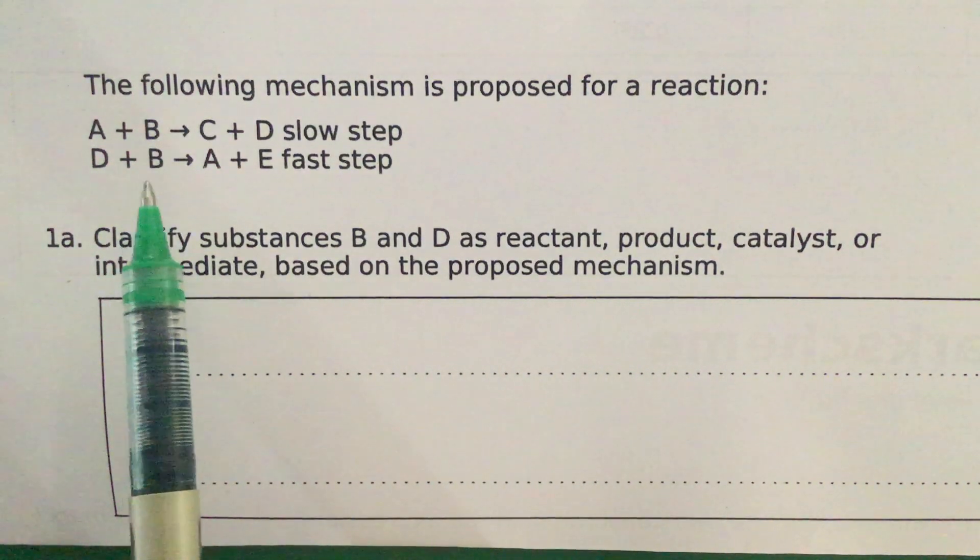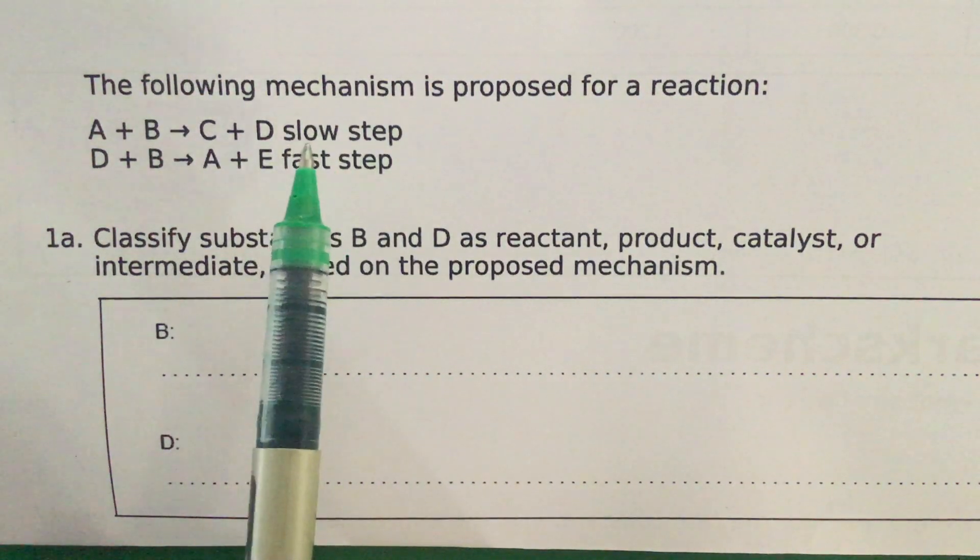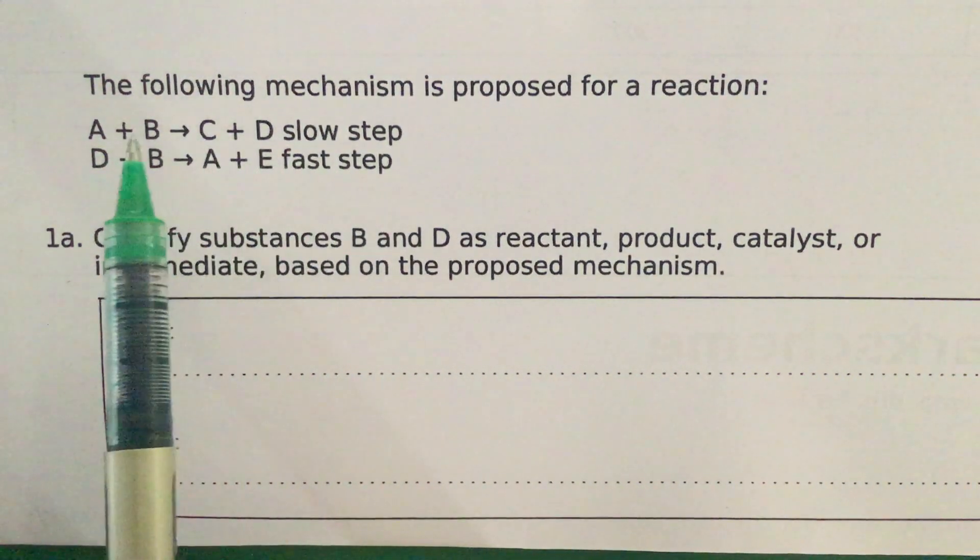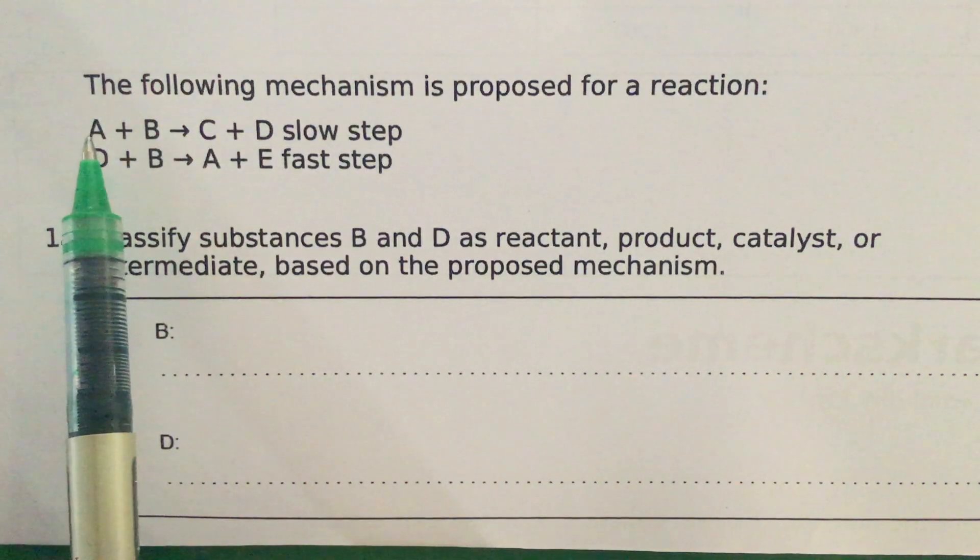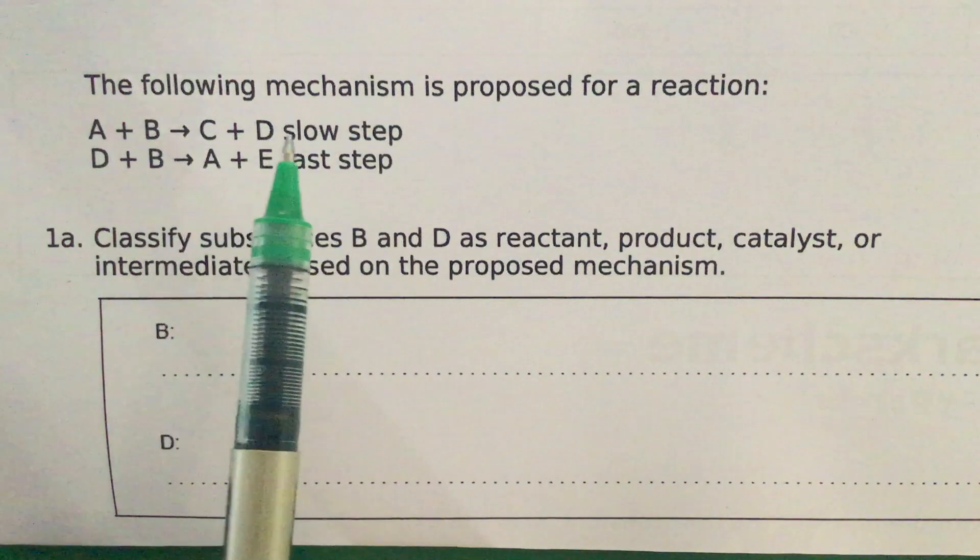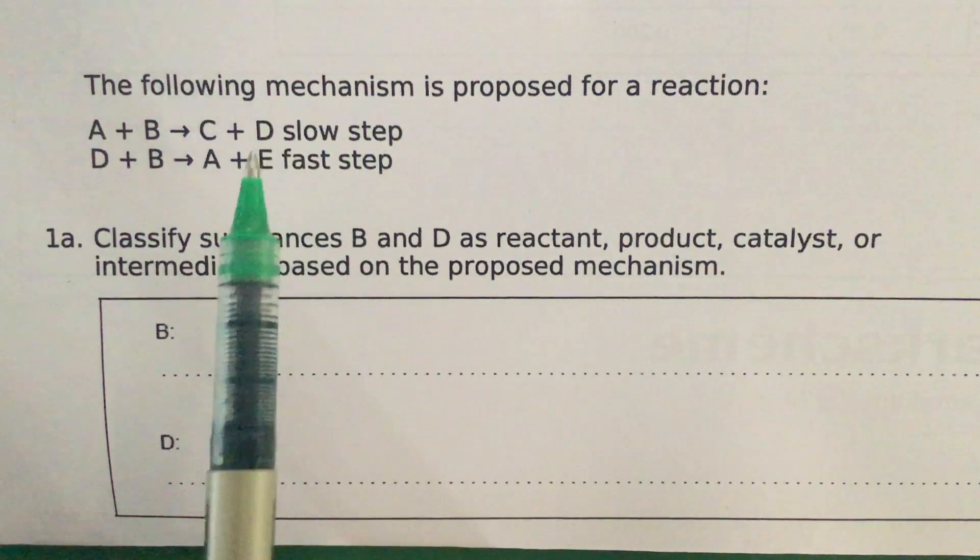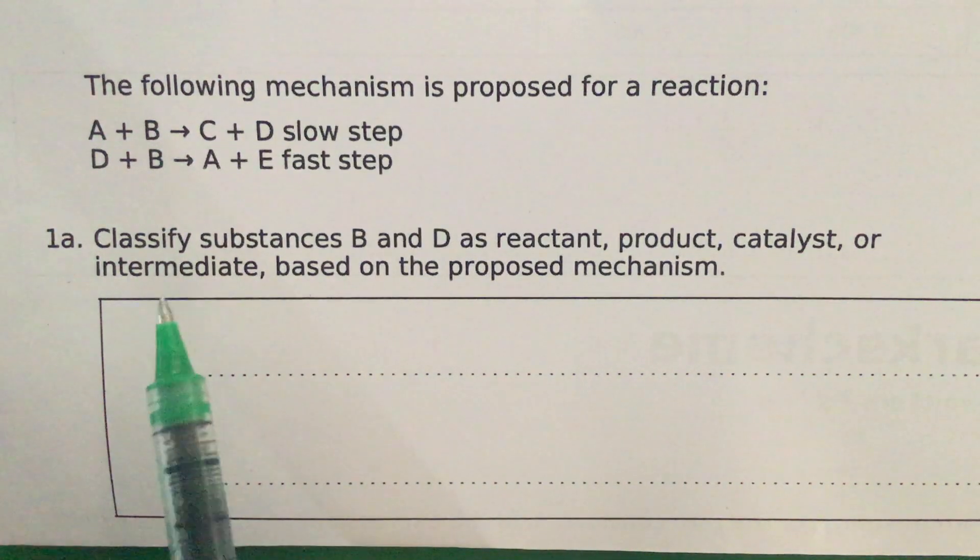a catalyst in this reaction. Looking at the slow step, which is the rate determining step, you notice that there are two entities, A plus B, interacting to allow that first step to happen. So let's look at the question